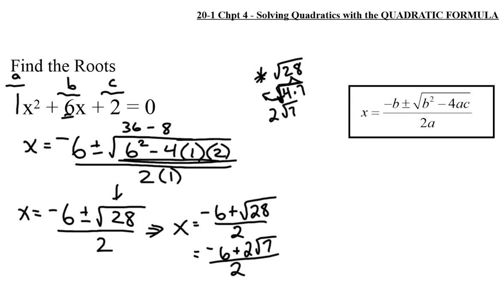But we're still not finished simplifying. The two terms in the numerator — negative 6 and 2 — both have a denominator of 2, and both terms can be divided by 2. Dividing 2 into both gives negative 3, and 2 divided by 2 is 1, leaving plus root 7. So one possibility is x equals negative 3 plus root 7.